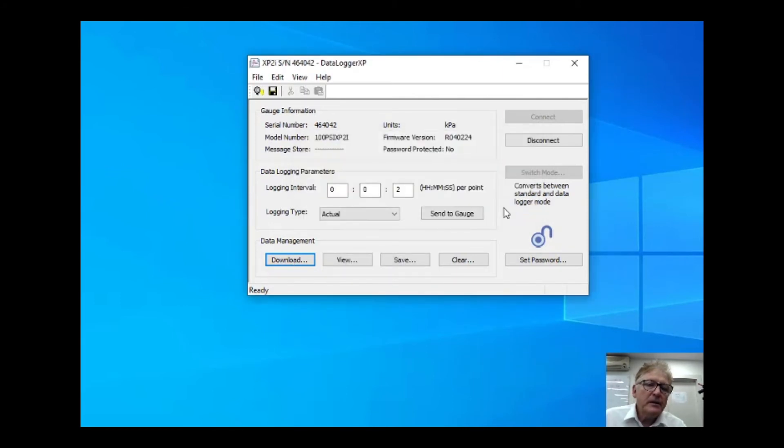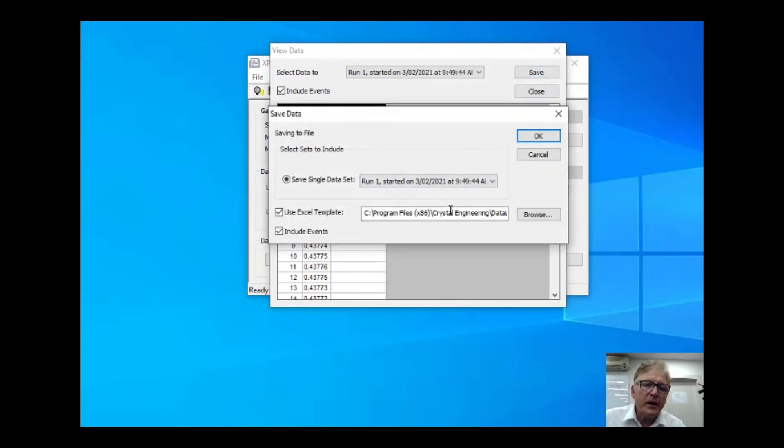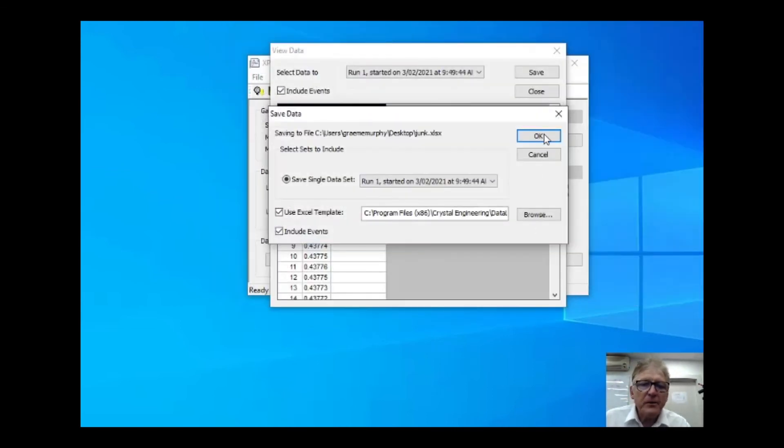And I'm going to now view this data. And here's the readings, etc. So if I click on save, gives me a few specs there. Click OK. And I'm going to call it just junk for the minute. J-U-N-K. Click save. OK.